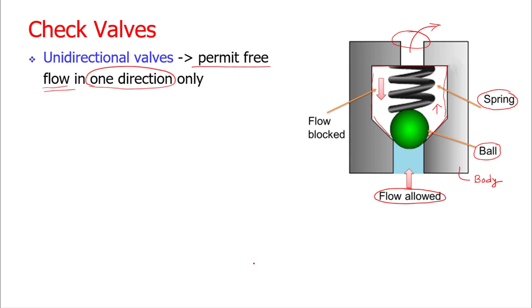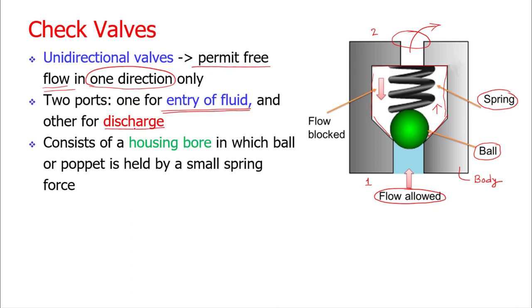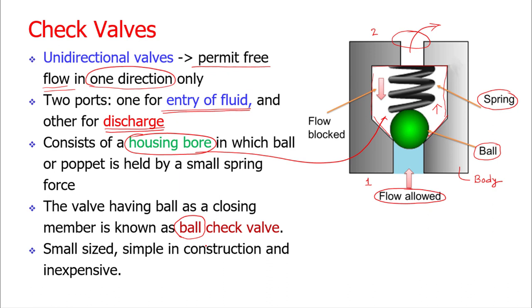There are two ports: one for fluid entry and one for discharge. This is the housing bore in which a ball or poppet is held. If a ball is used to check the fluid flow, it is called a ball check valve; poppet-based valves are also available. These valves are small in size, simple in construction, and inexpensive. For domestic purposes, such valves are used to control water flow. They are generally made of plastic (PVC) or metals such as brass, stainless steel, or bronze.